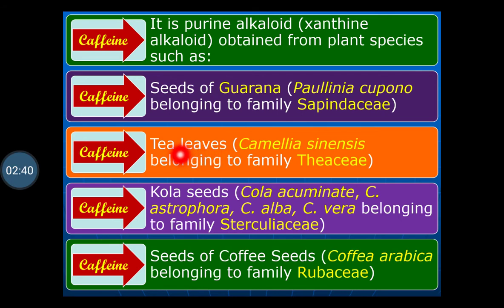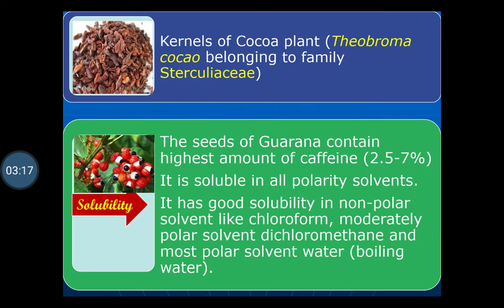Tea leaves are a common drink used in India, obtained from Camellia sinensis or Thea sinensis belonging to family Theaceae. Cola seeds are obtained from Cola acuminata, Cola astrophora, Cola alba, and Cola vera belonging to family Sterculiaceae. Coffee seeds come from Coffea arabica belonging to family Rubiaceae. Caffeine is also obtained from kernels of cocoa, Theobroma cacao belonging to family Sterculiaceae. Among these, the seeds of Guarana contain the highest amount of caffeine — 2.5 to 7%.